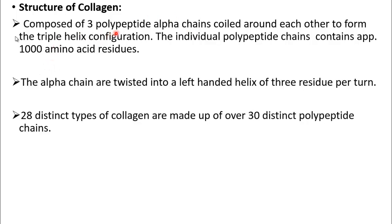The three polypeptide alpha chains are coiled around each other to form the triple helical configuration. The individual alpha chains are twisted into a left-handed helix with three residues per turn. There are 28 distinct types of collagens, which are made up of 30 distinct polypeptide chains.